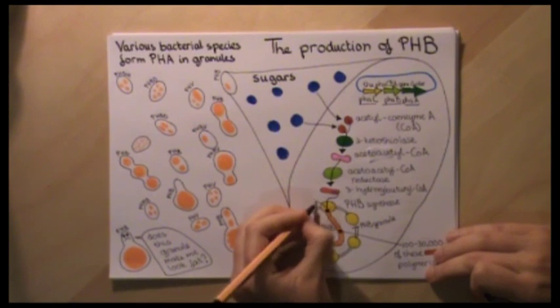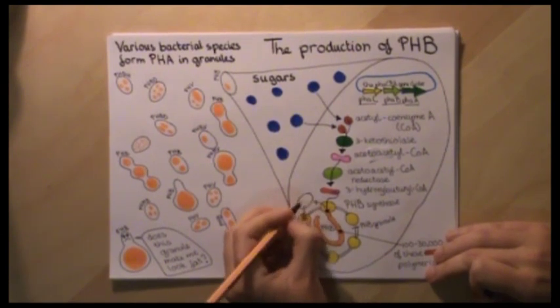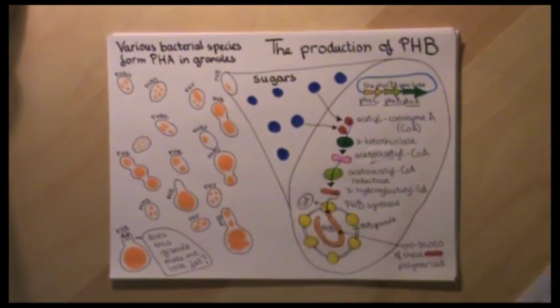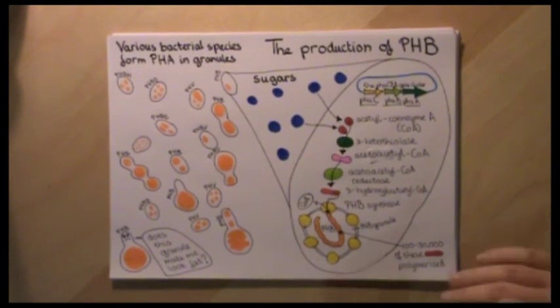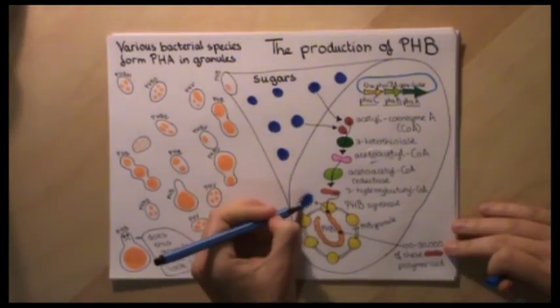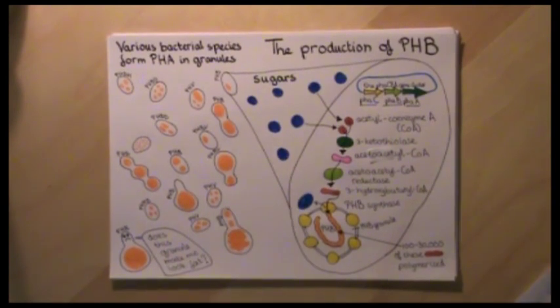This is only one pathway in which bacteria can form a PHA. There are also many other pathways known for forming PHA, and they all have the last step of this process in common.